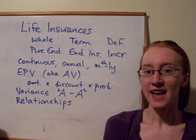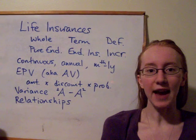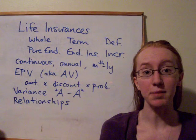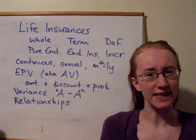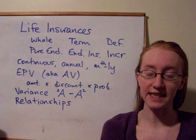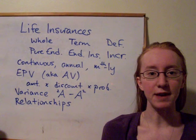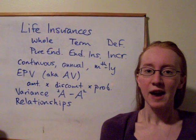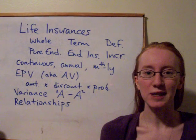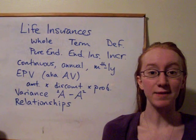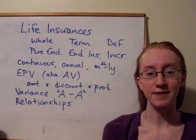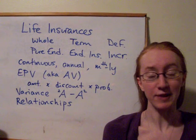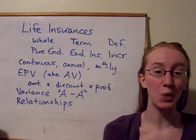Each one of these insurance types could have a different payment scheme. We can have continuous, where the payment is made immediately upon death — obviously not a very realistic assumption, but mathematically it makes it easy to calculate. We could have annual, where the benefit is paid at the end of the year of death — again, not very realistic. And we could have the most realistic and most difficult case, where the benefit is paid at the end of the 1/m-th of a year of death. So if m equals 12, it would be paid at the end of the month of death; if m equals 4, it would be paid at the end of the quarter of death.